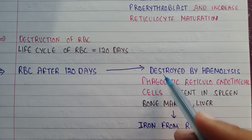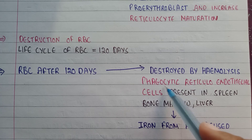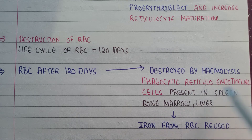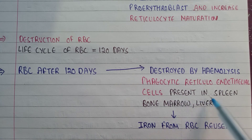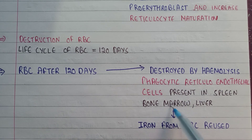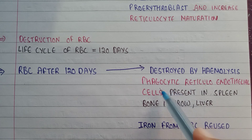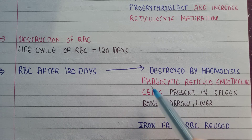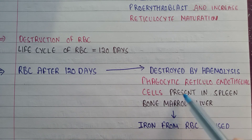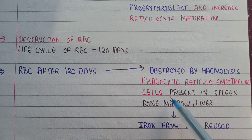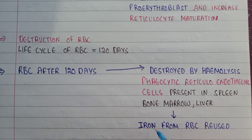The phagocytic reticuloendothelial cells, present in the spleen, bone marrow, and liver, phagocytose — meaning they eat up or destroy the RBC. They break down the RBC to form iron, and this iron is reused.